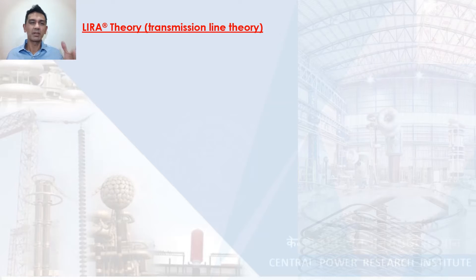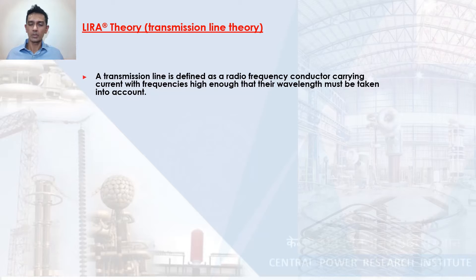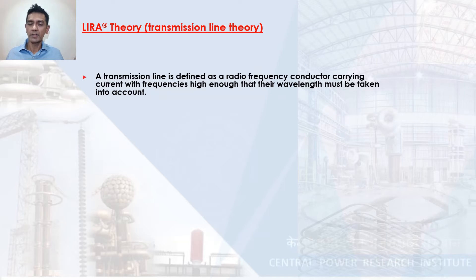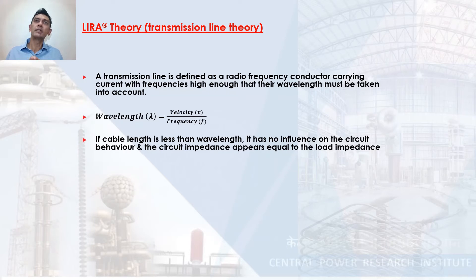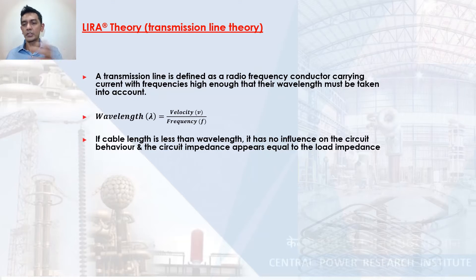Lyra theory is essentially transmission line theory. A transmission line is defined as a radio frequency conductor carrying currents whose frequencies are high enough that the wavelength must be taken into account. Wavelength is the velocity at which a signal is transmitted divided by its frequency. If the cable length is less than the wavelength, the impedance of the cable circuit will match the load impedance and there is no influence of length on cable behavior.